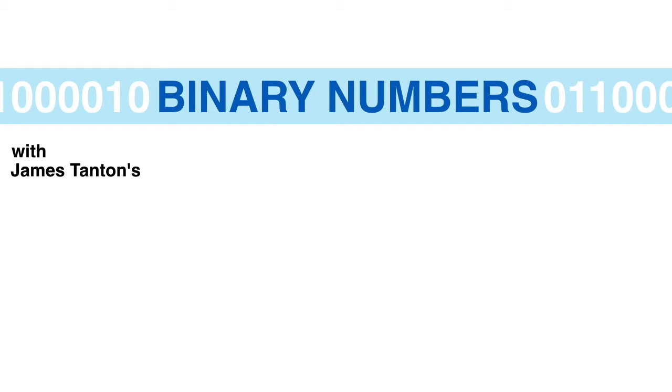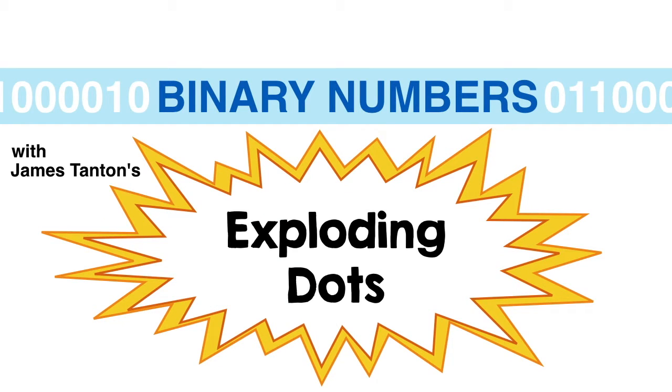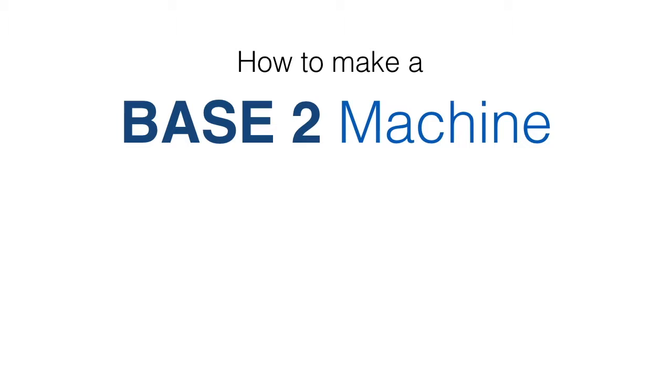Binary Numbers with James Tanton's Exploding Dots. We're going to show you how to make a base 2 machine with one simple rule. Two dots on the right go to one dot on the left.